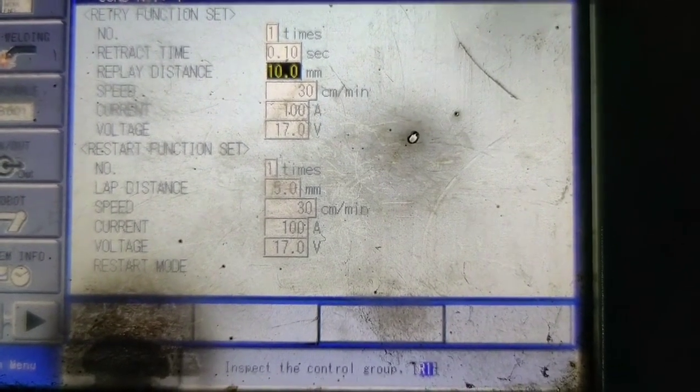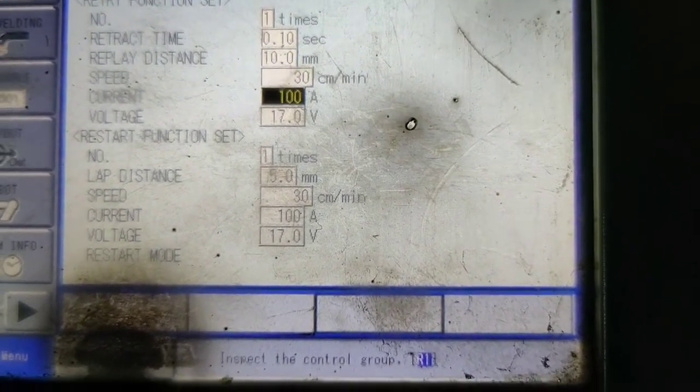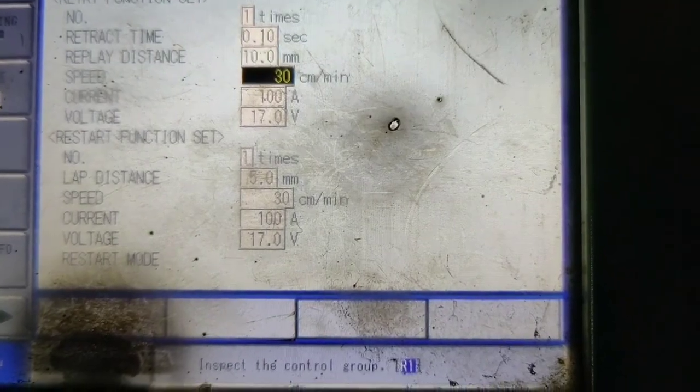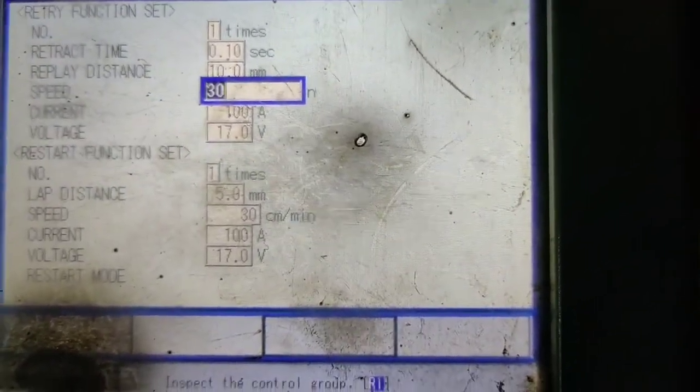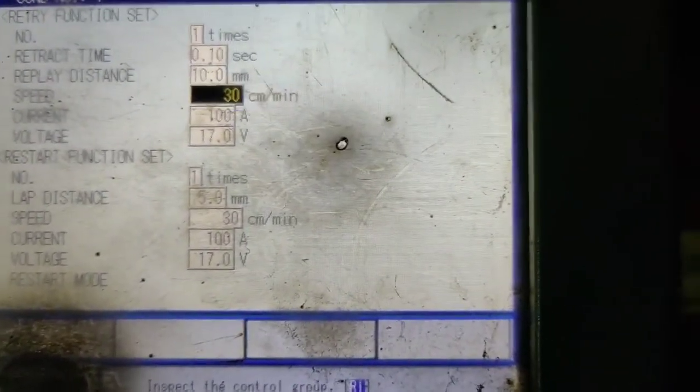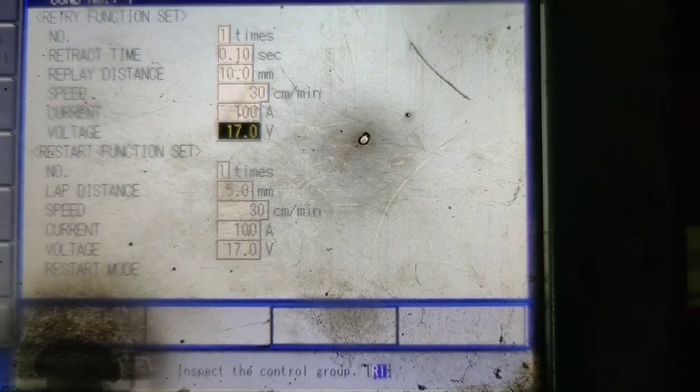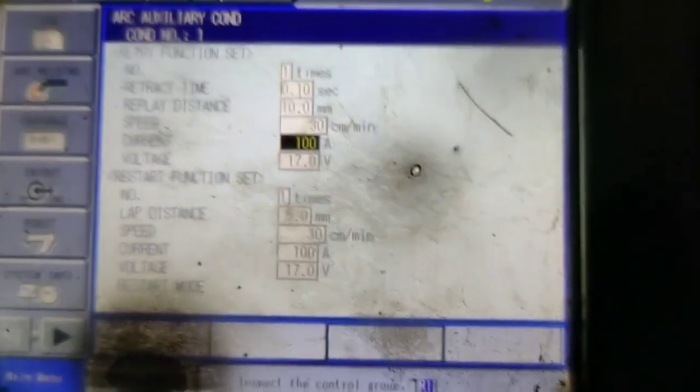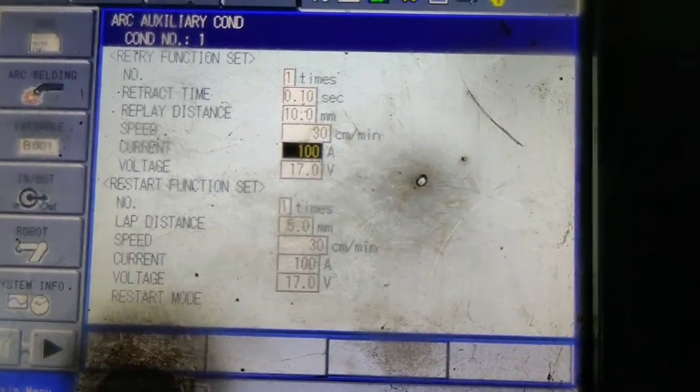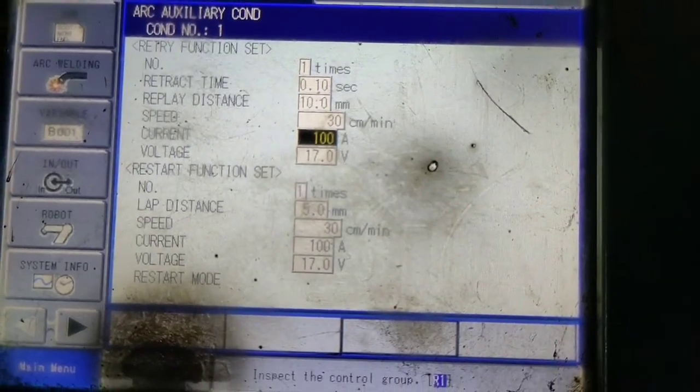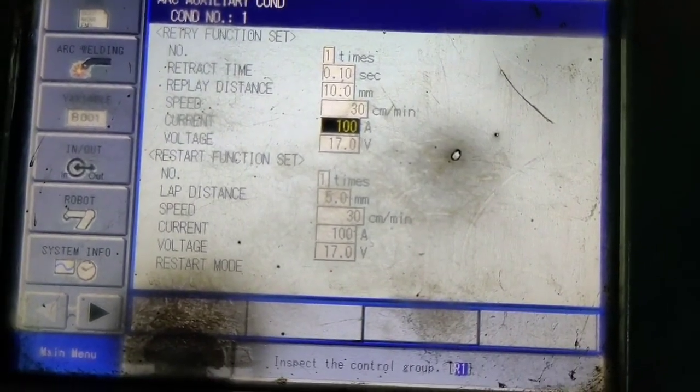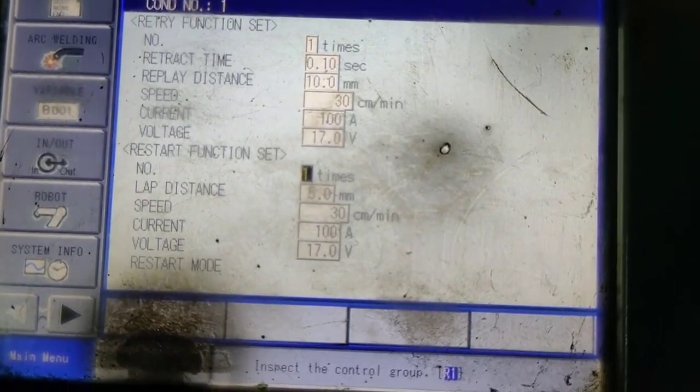Means replay distance, then I'm going to back at speed of 30, current at 100, voltage at 17. It goes back at this parameter and then starts again welding. Due to inching it clears and eliminates the contaminated material. And then we have started restart function.